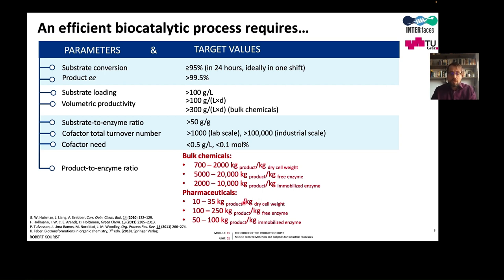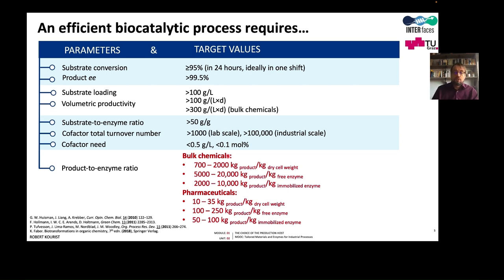For a pharmaceutical, it is sufficient to produce 35 kilograms of product with one kilogram of cell dry weight. For the free enzyme, the value is 250 kilograms of product. For a bulk chemical, we have to produce as much as two tons of product per one kilogram of cell dry weight. This shows that the production of the enzyme is a crucial cost factor for any process.